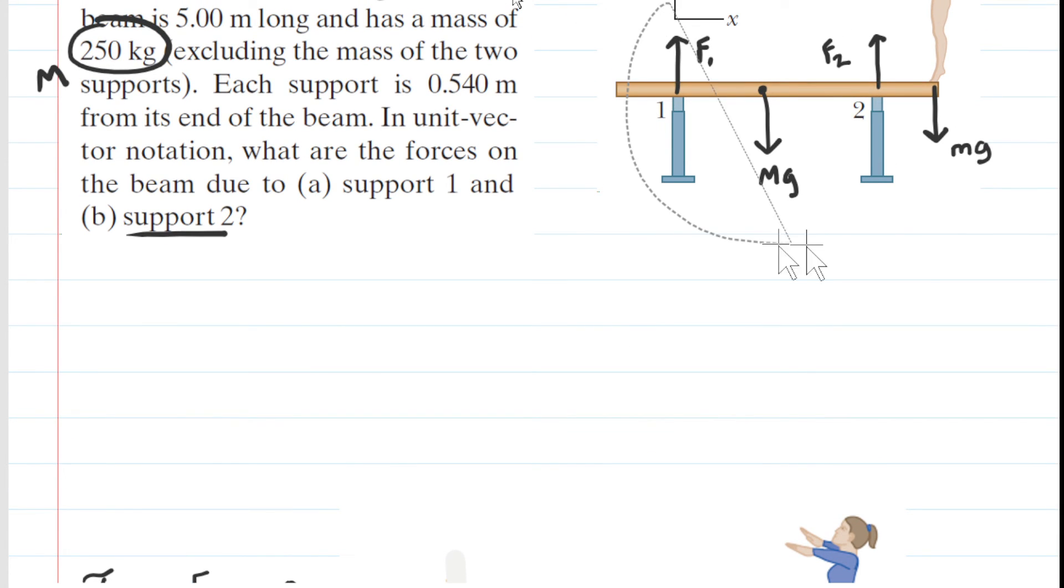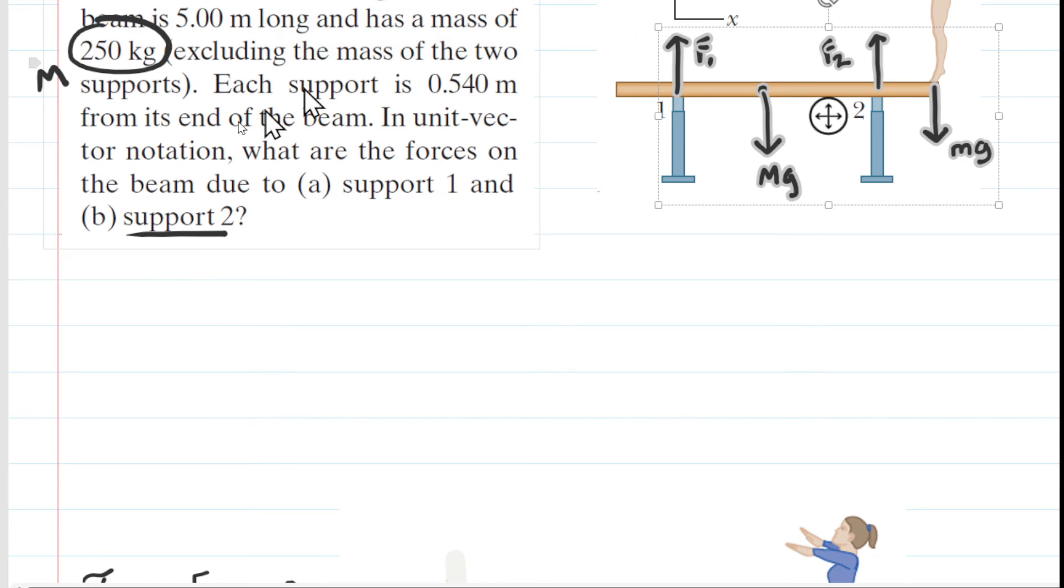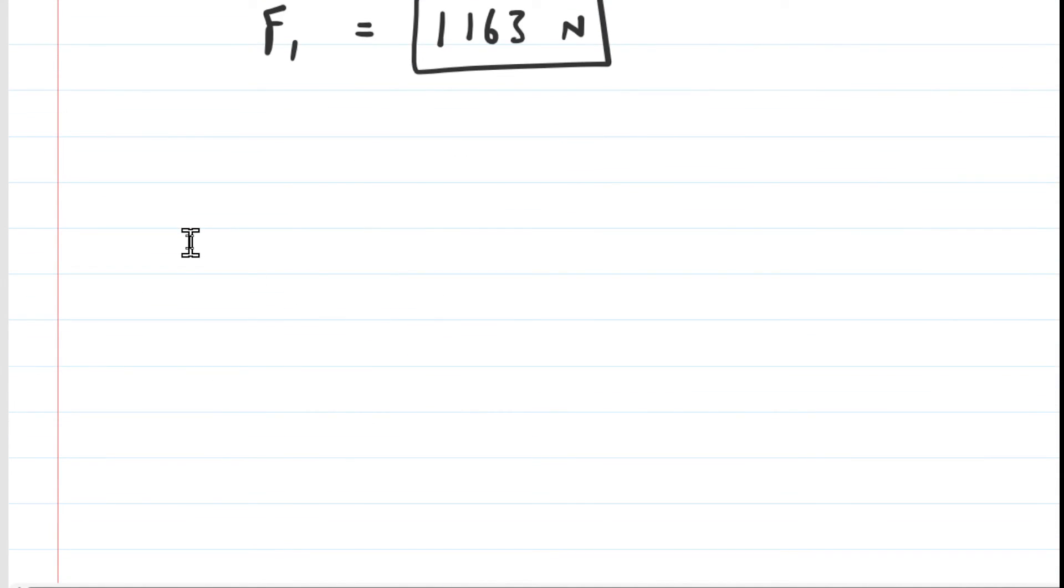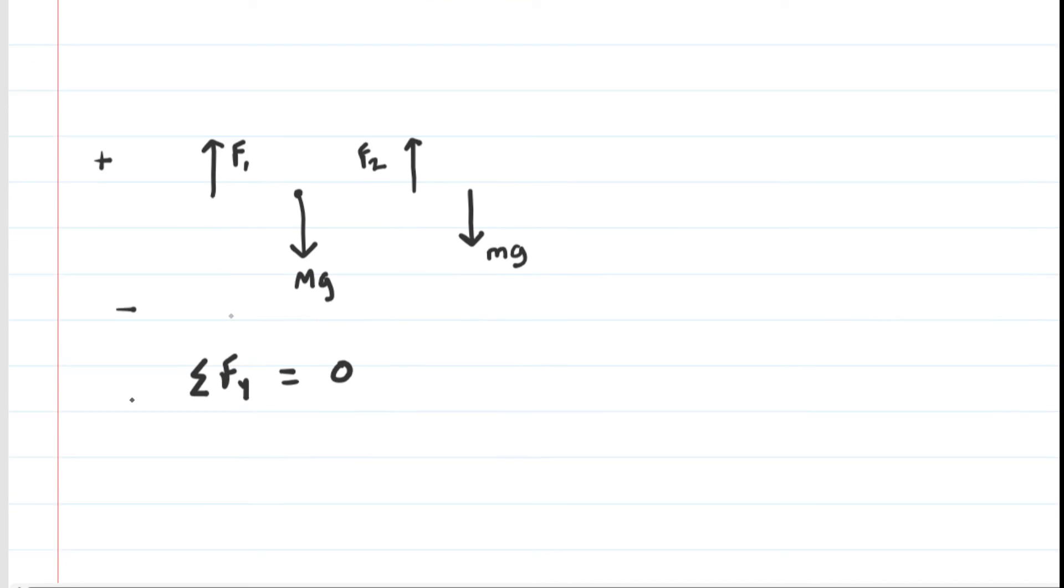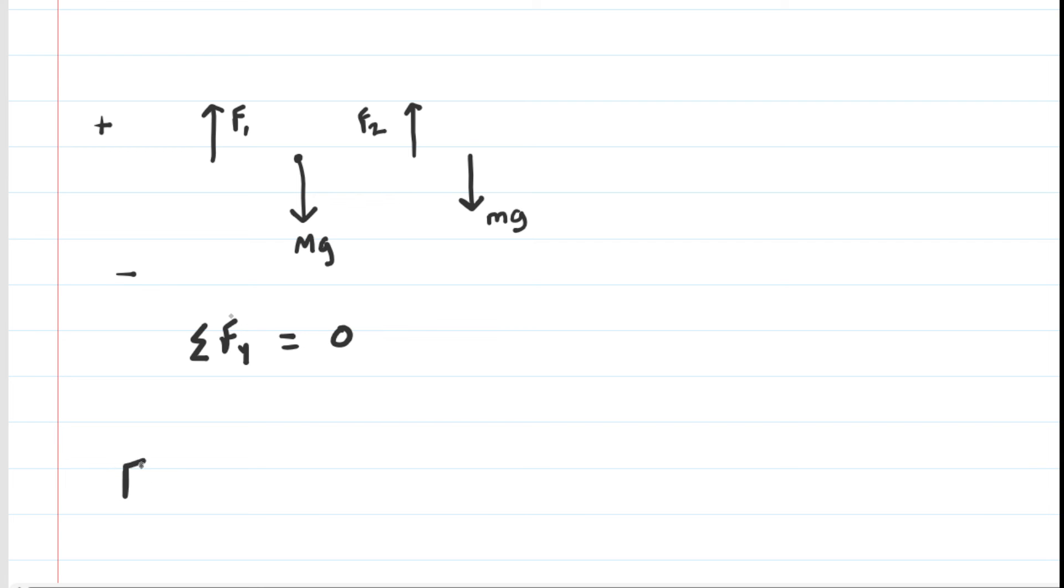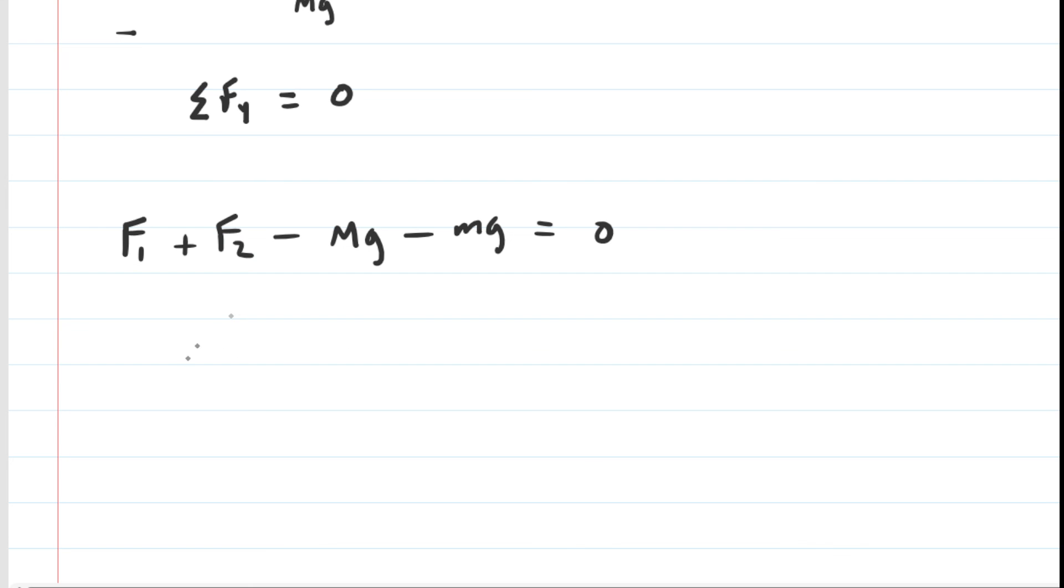Newton's second law advises us to sum the forces in the y direction. If we recall that the beam is in equilibrium, then we can say that the sum of these forces acting in the y direction is going to equal zero newtons. The upward forces can be assigned positive and the downward forces can be negative. We would have F1 plus F2 and then minus big MG minus little MG, set that equal to zero. Let's add the two MG forces to the other side and then subtract F1. So we would have F2 equals MG plus MG minus the F1 force.